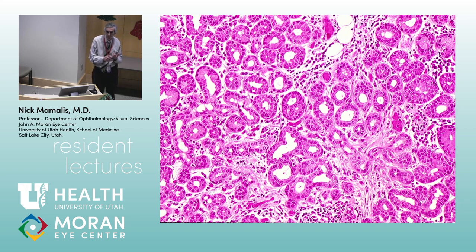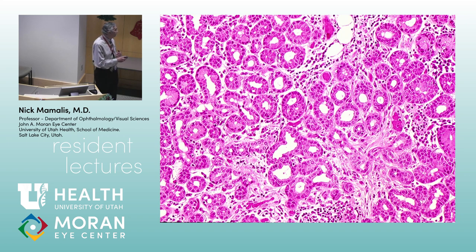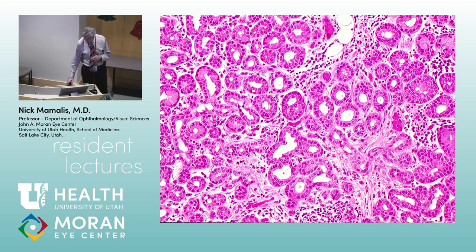In the eyelid there are a couple of different types of eccrine glands. What are some eccrine glands in the eyelid? Lacrimal glands — that's a classic example. What else? Sweat glands. Believe it or not, your eyelids can sweat. So these are the eccrine acinar-type glands in the eyelid.